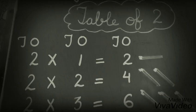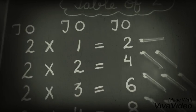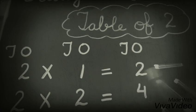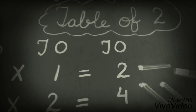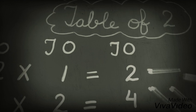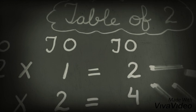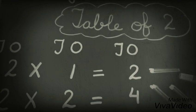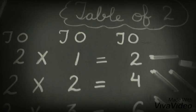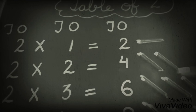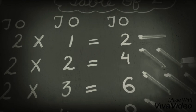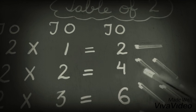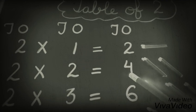I have taken some objects. Look at this. Two ones are two means when you take two objects one time, it means you take two one times. When you take two one times, it becomes two — ones are two. And when you take two two times, then you will get one, two, three, four. Then you will get two twos are four.